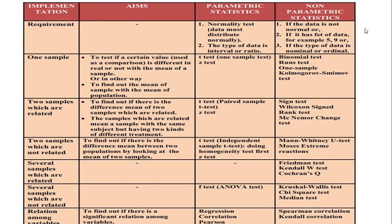In parametric statistics, you must do a normality test first before doing the final test. If you have one sample and the normality test shows that the data distribute normally, you must use the one-sample t-test. But if the data do not distribute normally, you must go to non-parametric statistics.